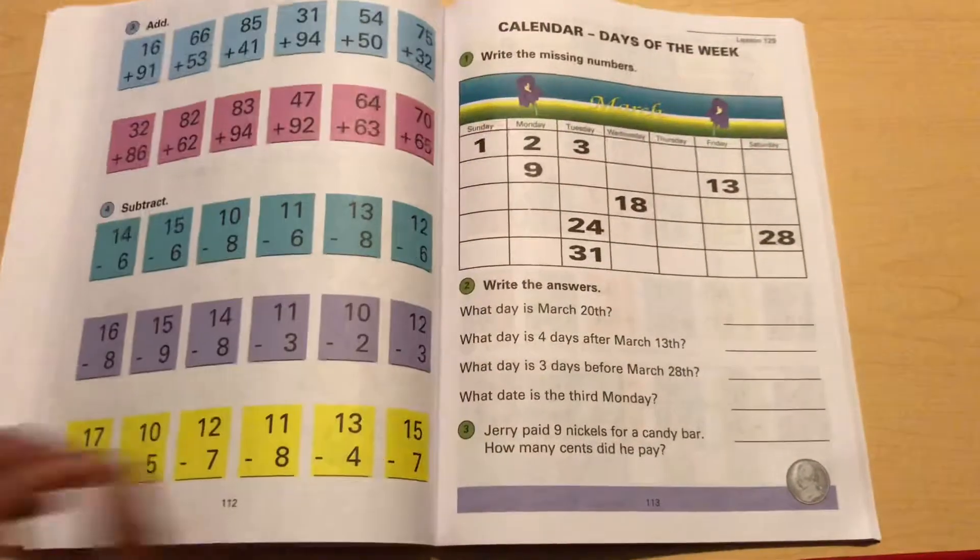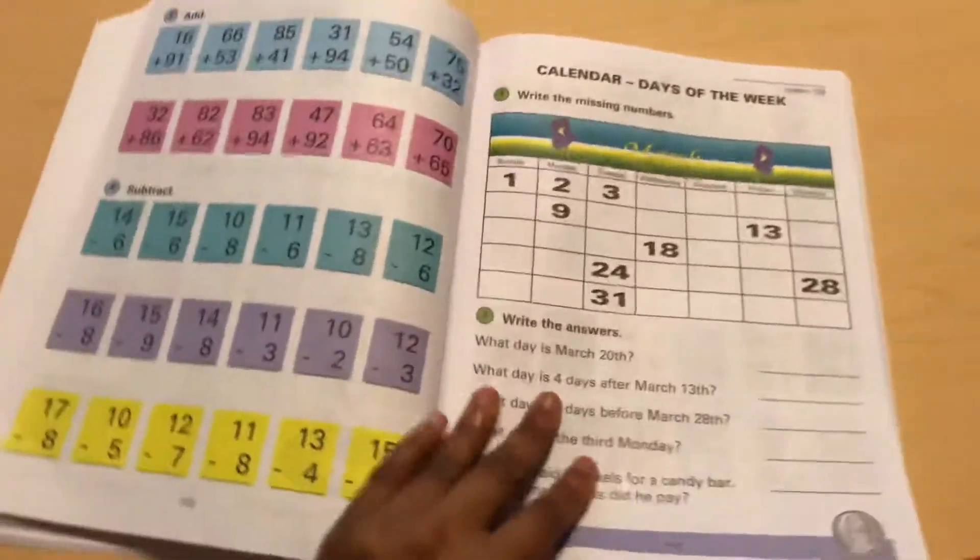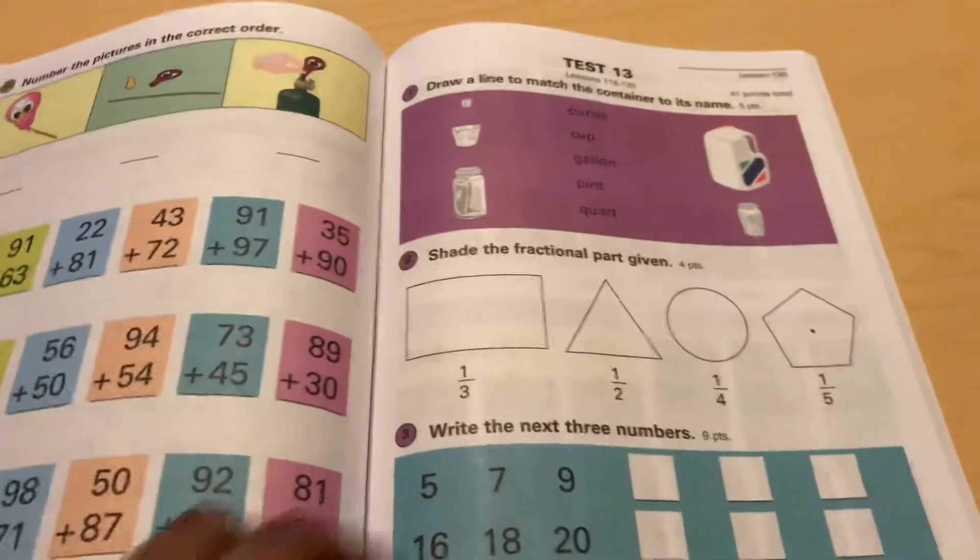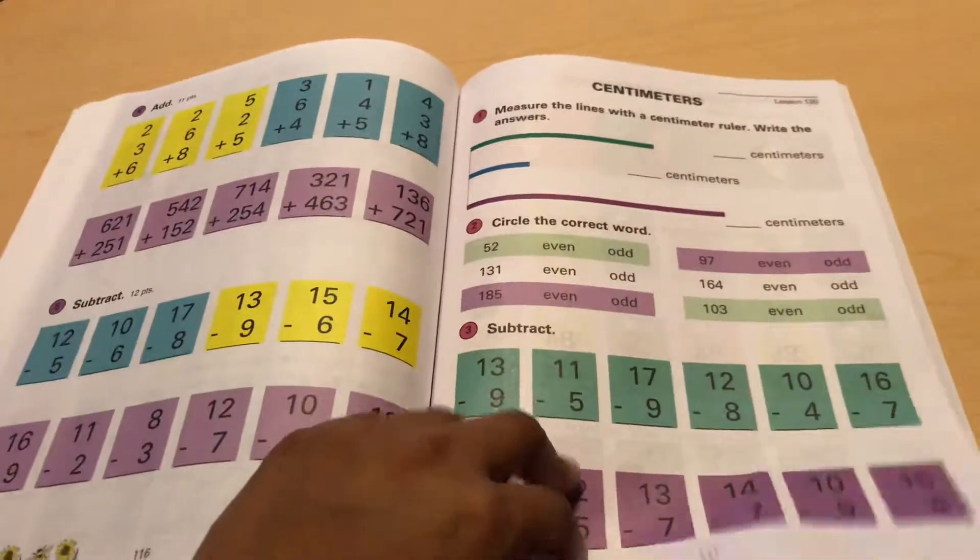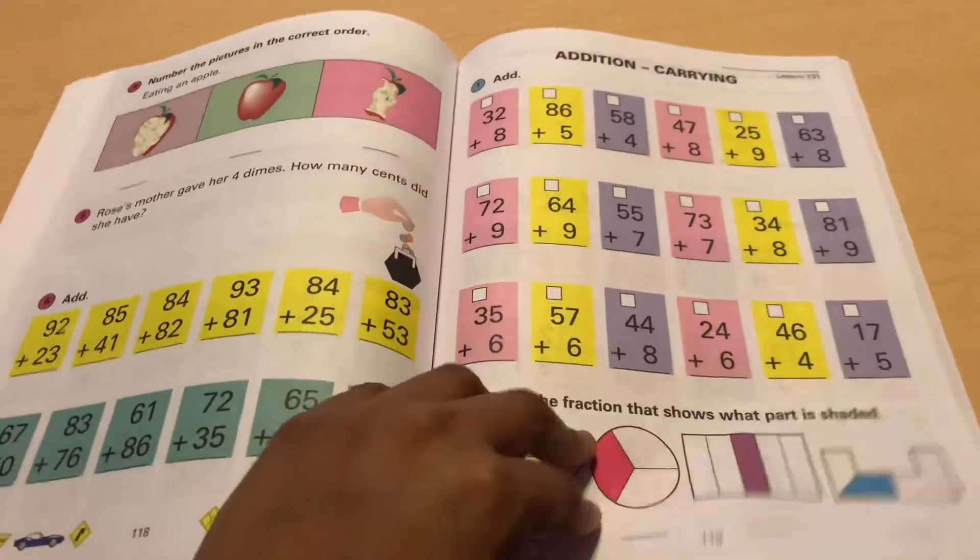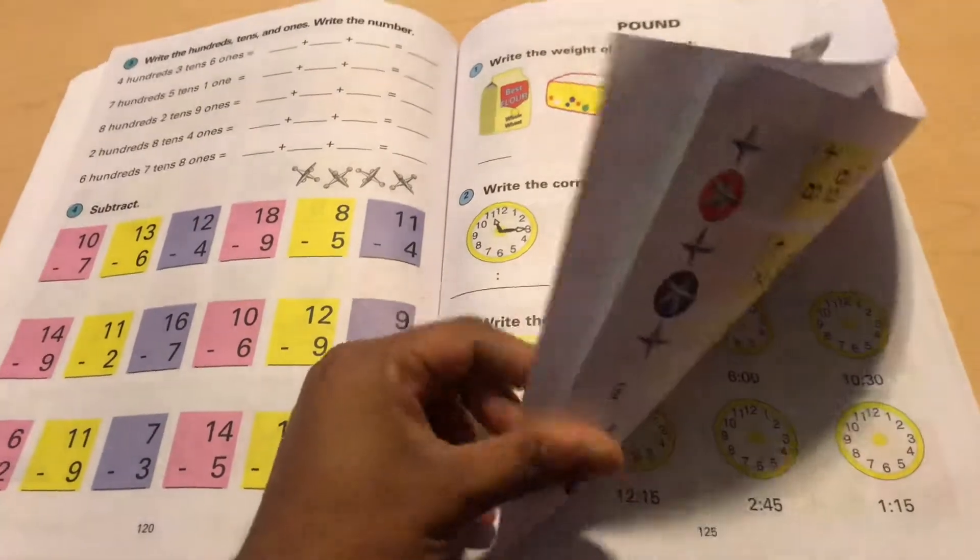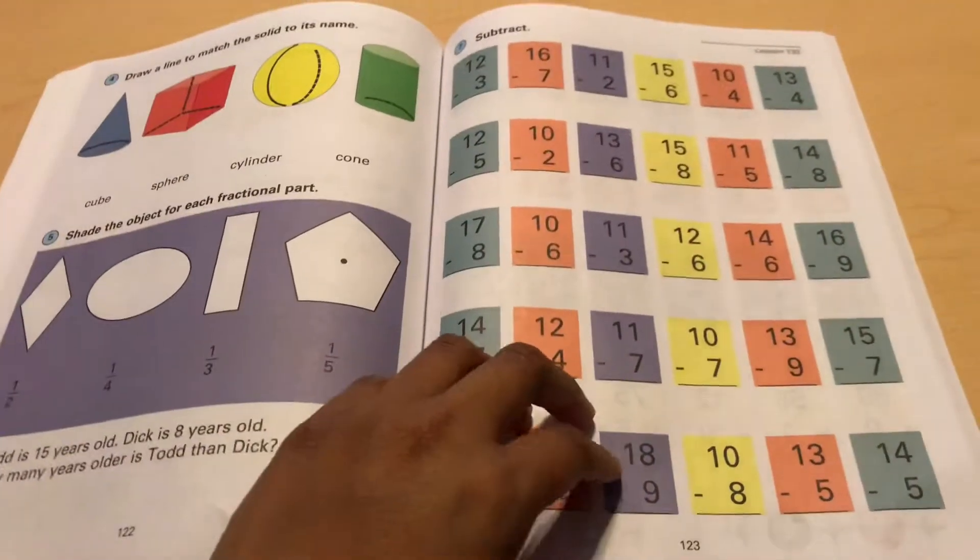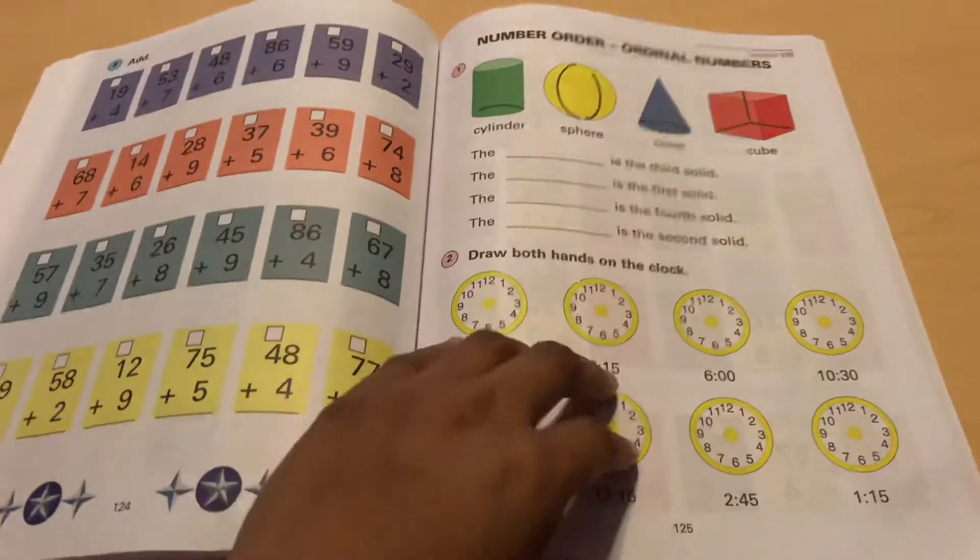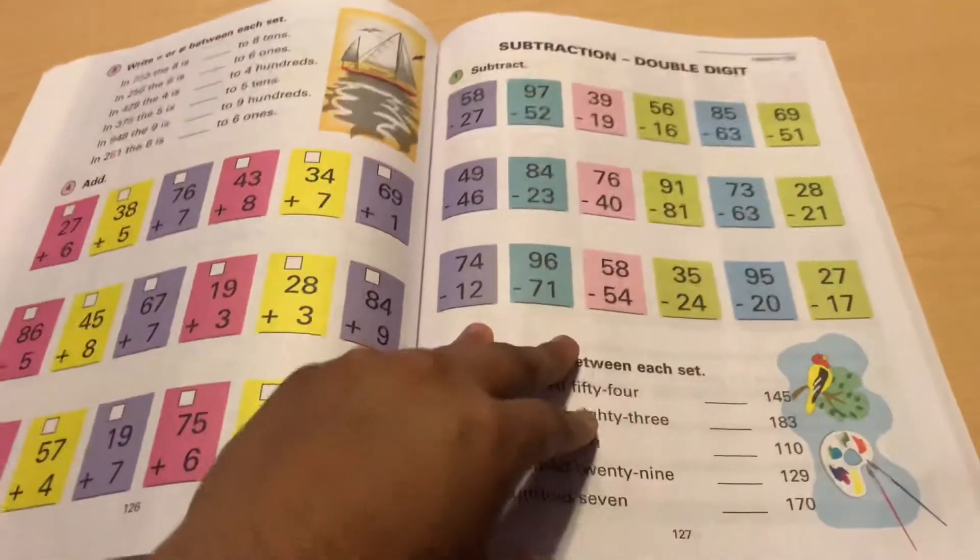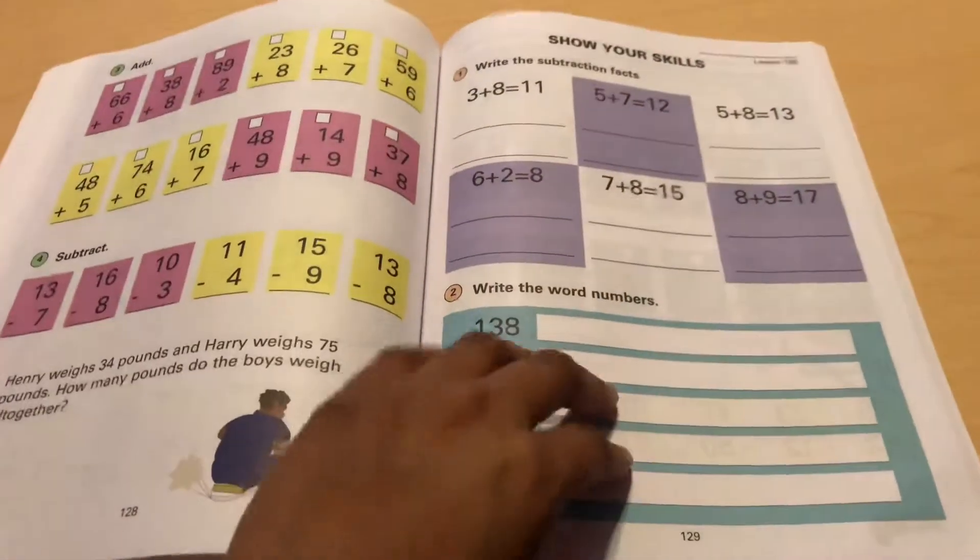So yeah, I'm only worried about that at the moment. She's picking things a lot faster. Like in the beginning of the first book, she was struggling and she wasn't liking it. But now I asked her today, is she liking her math book? And she says she is. And she says one of her favorite subjects is math.